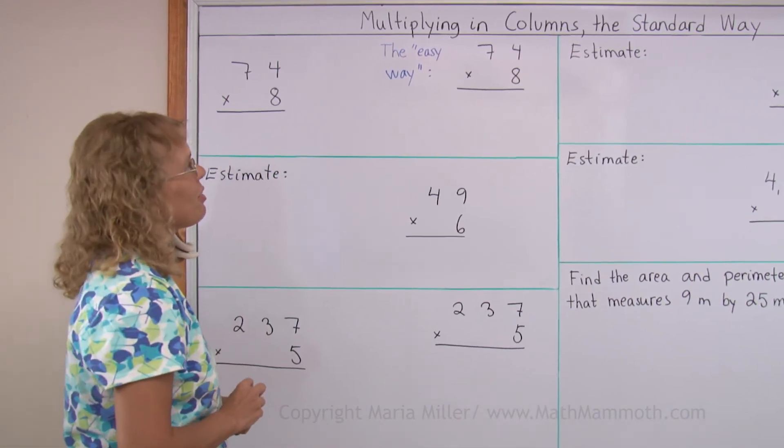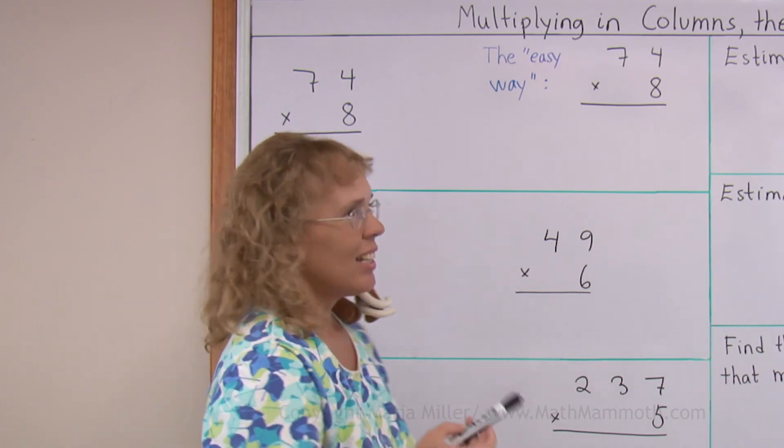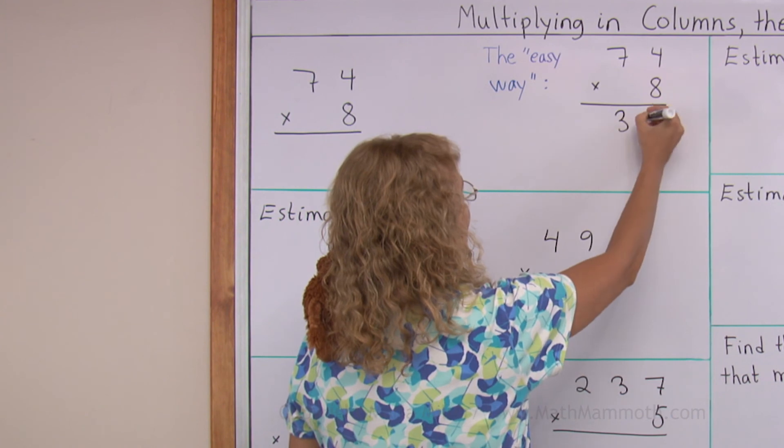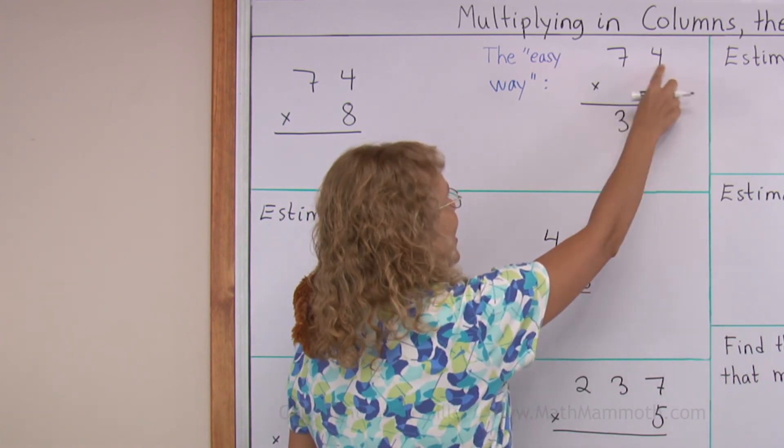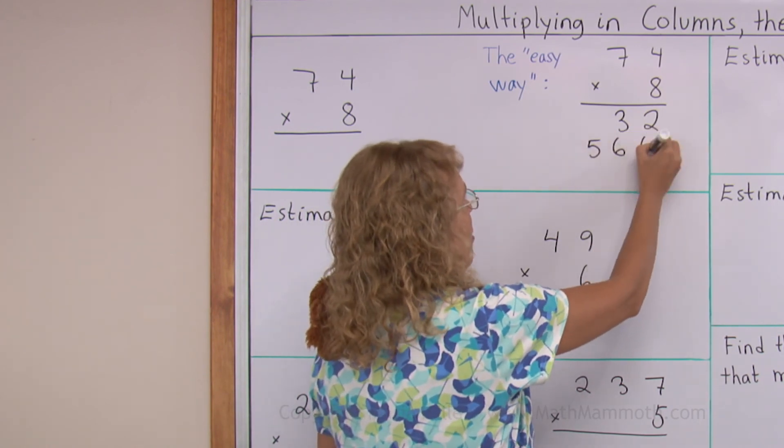Let me remind you first with this problem about the easy way, 74 times 8. We went 8 times 4, 32. And then 8 times 70, 8 times 70, 560. And we added.